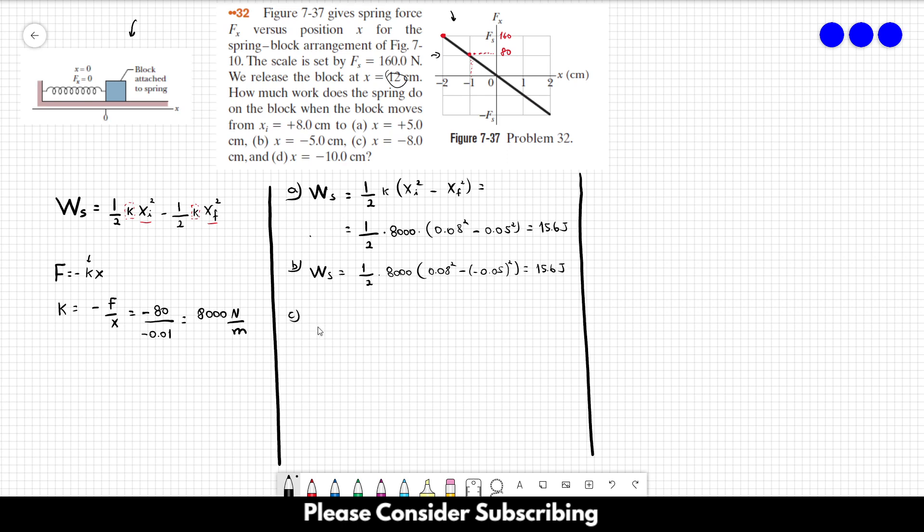For letter C, it will be 1 over 2 times 8,000, which multiplies 0.08 squared minus minus 8, 8 squared, and then you get 0.08 squared, and then you get 0 in this case because those terms cancel each other.